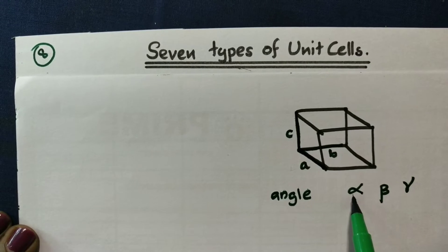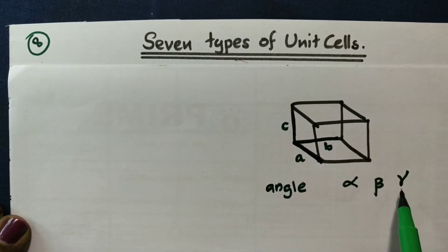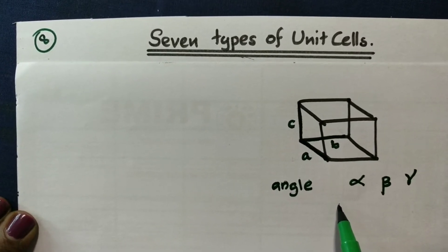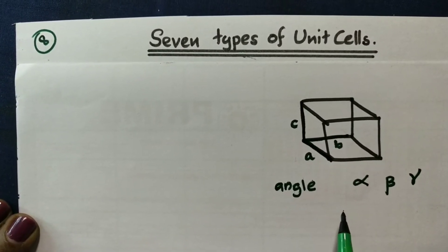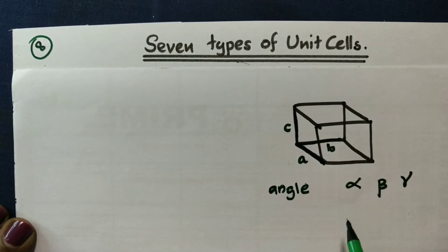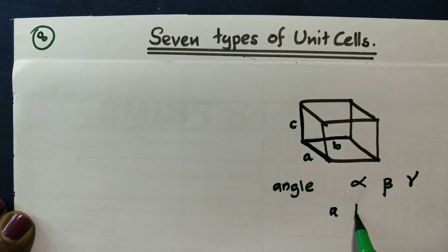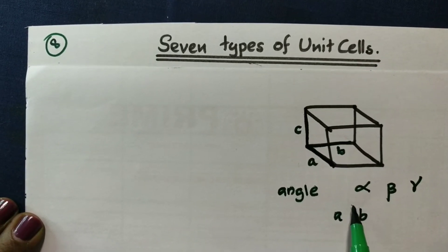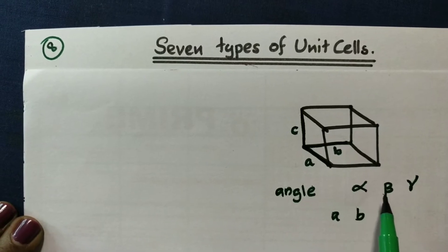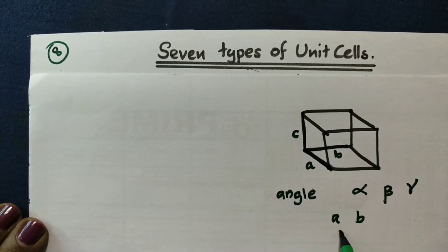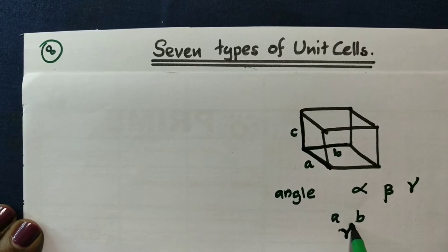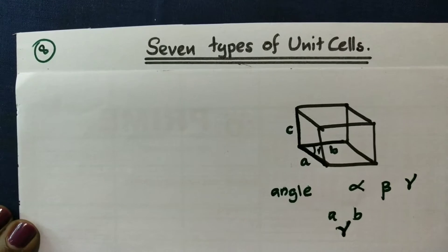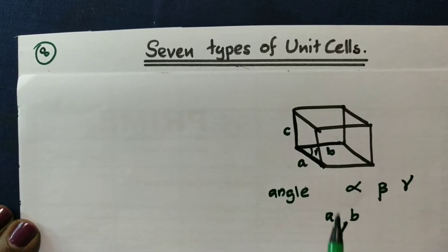This is alpha, beta, gamma. Now, alpha and beta — there is A, B. This angle is alpha, beta. Gamma is the angle between axes. We can see the angle.